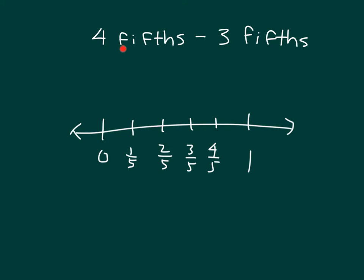We're going to go four-fifths and subtract three-fifths. So we'll start with four-fifths and place four-fifths onto that number line. If we are going to subtract three-fifths, then we would move to the left on our number line. We're going to move three-fifths to the left. So we start at four-fifths — count with me — one-fifth, two-fifths, three-fifths. I started at four-fifths and subtracted three-fifths, so I end up at one-fifth.